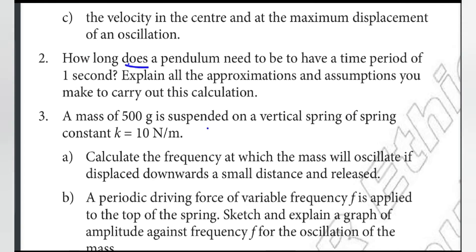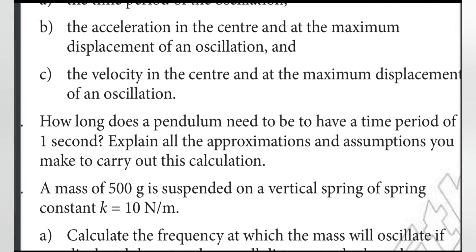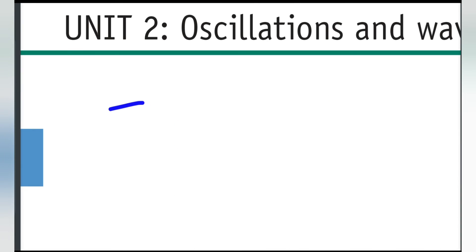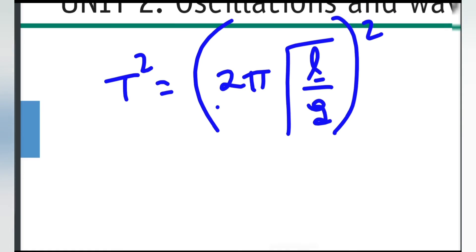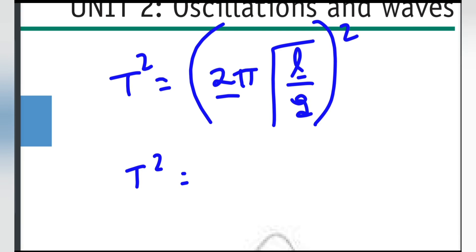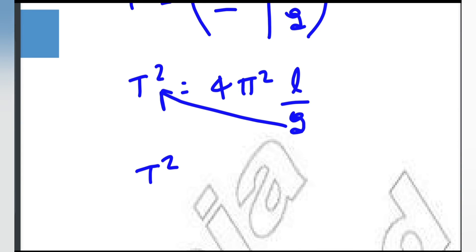How long does a pendulum need to be to have a time period of one second? The time period is 1 second. The formula is: time period equals 2π times the square root of length over gravity.